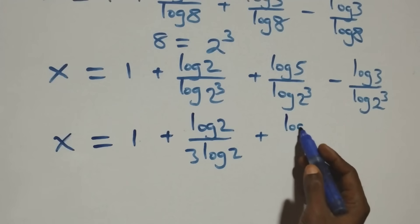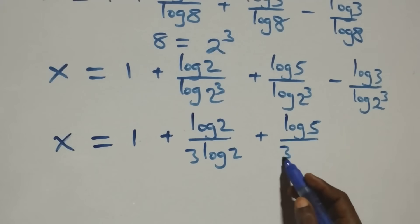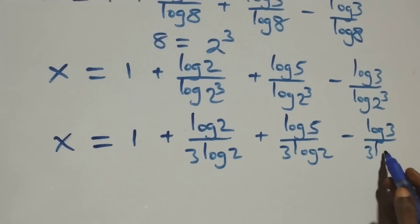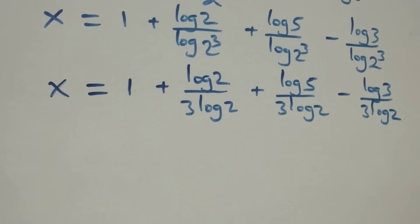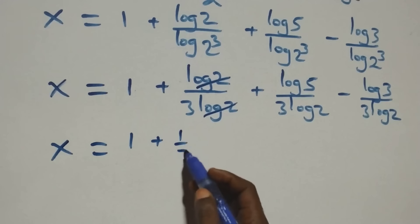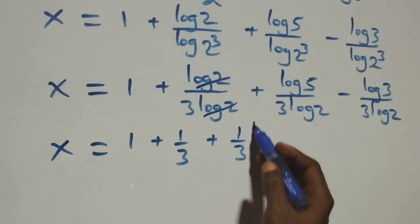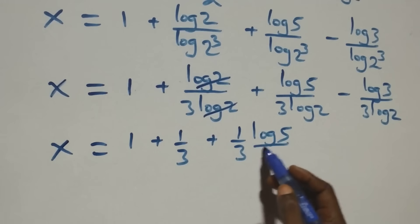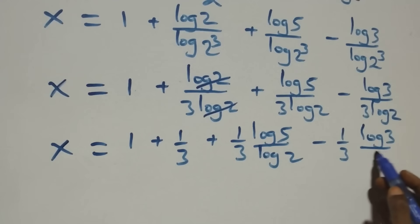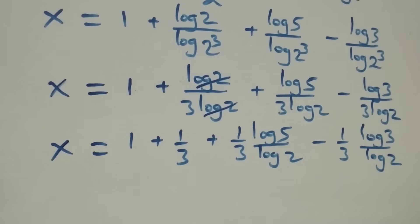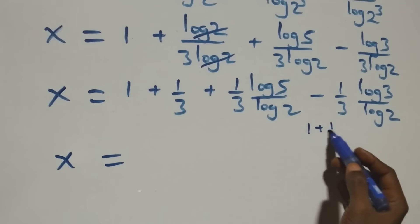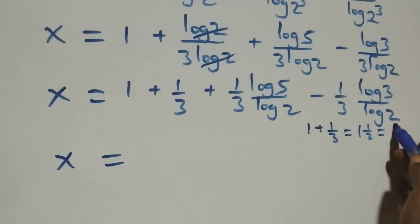So we have x equals 1 plus log 2 over 3·log 2, plus log 5 over 3·log 2, minus log 3 over 3·log 2. Log 2 cancels each other, leaving 1 over 3. That is x equals 1 plus 1/3, which we write as 4/3. So x equals 4/3 plus (1/3)·(log 5 over log 2) minus (1/3)·(log 3 over log 2).